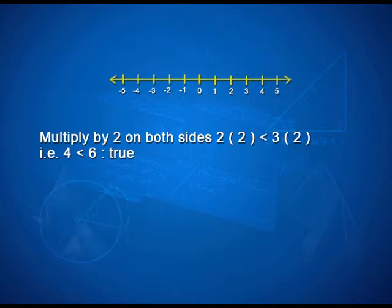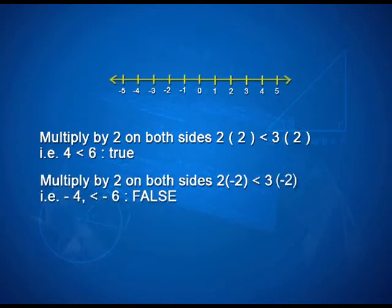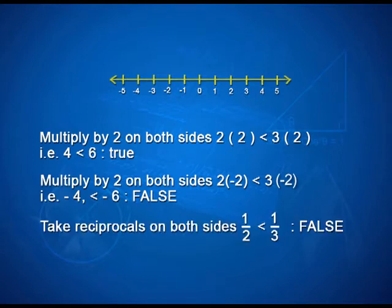Multiply by 2 on both sides: 2 into 2 is less than 3 into 2, that is 4 is less than 6, which is true. Multiply by minus 2 on both sides: 2 into minus 2 is less than 3 into minus 2, that is minus 4 is less than minus 6, which is false. Take reciprocals on both sides: 1 by 2 is less than 1 by 3, which is again false.